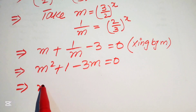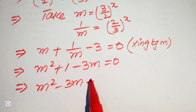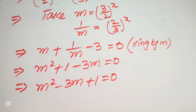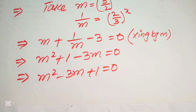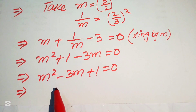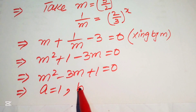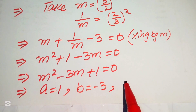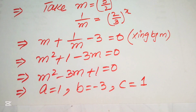Rearranging gives m² - 3m + 1 = 0, which is quadratic in m. The coefficients are a = 1, b = -3, c = 1.